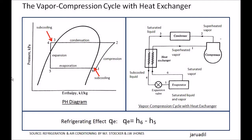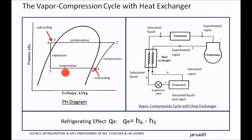Now let us look at the refrigerating effect. What is the refrigerating effect here? The refrigerating effect, by definition, is from 5 to 6 — because that is where the refrigeration cycle actually occurs. The refrigeration happens at 5 to 6. From 6 to 1, there is no refrigeration because that process happens in the heat exchanger. So the refrigerating effect is H6 minus H5.